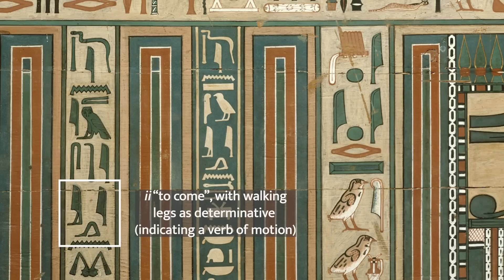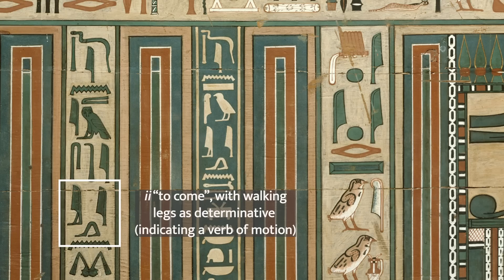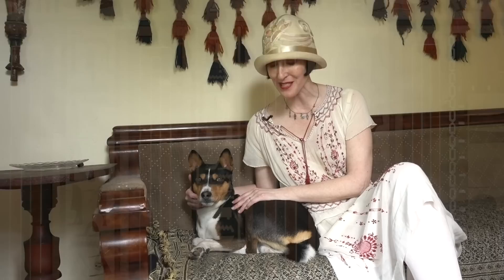For example, if you're talking about a verb of motion, you'd use a pair of legs. If you're talking about Basenjis — Chesom dogs — you would actually have a picture of a Basenji, and there are examples that look just like Narmer at the end of the word. That Basenji determinative at the end of a hieroglyphic word doesn't add any phonetic meaning, but it gives you a clue as to what that word means.